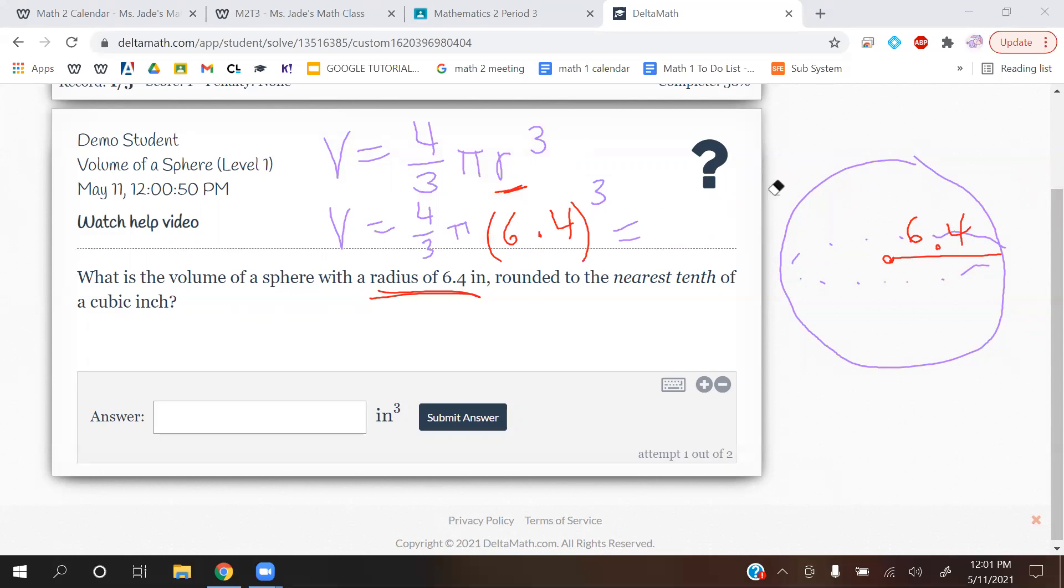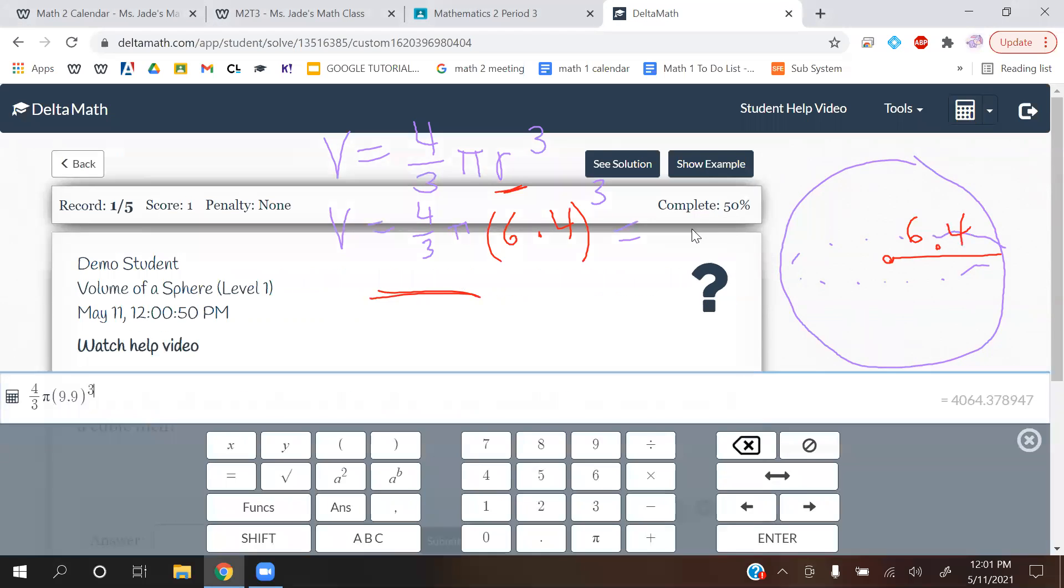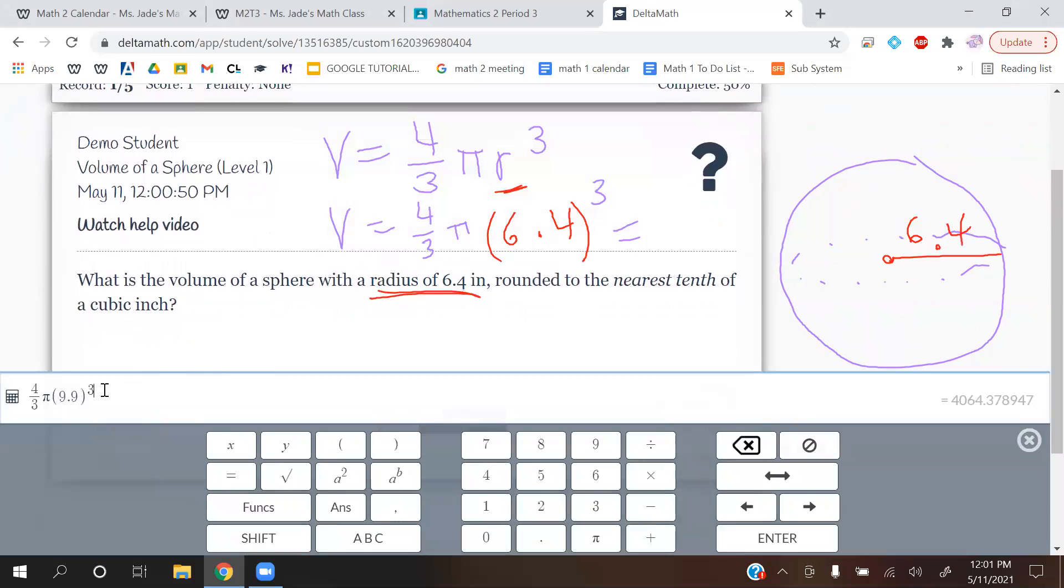Let's see what the calculator gives us this time. Give me that number that I'm about to write out. Okay, and then we're going to round it to the nearest tenth. Take a look at one decimal after.